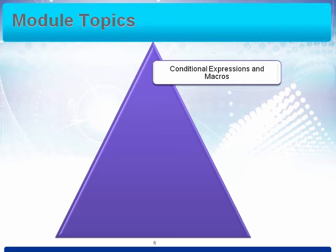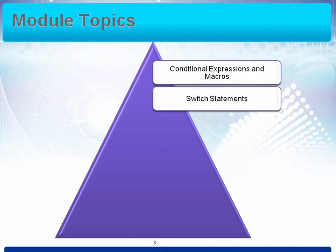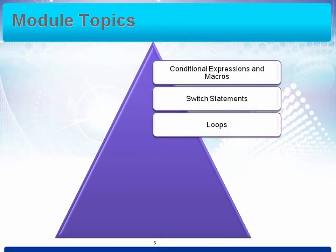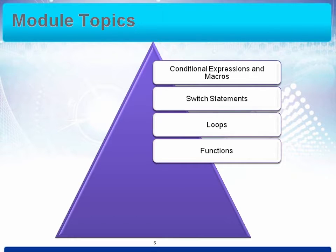We're then going to move on to conditional expressions, which is kind of like a shorthand way of doing an if statement. We'll talk about macros so you can start modularizing your code. We're going to introduce switch statements, which is a nice efficient way of controlling the logic in your program if you want to do A, B, or C depending on the decision. Then we'll talk about loops — there are several types in C and we'll discuss when you'd use one versus the other. That will lead us to functions, and we'll talk about how to write them, how to pass things in, and how to return things.